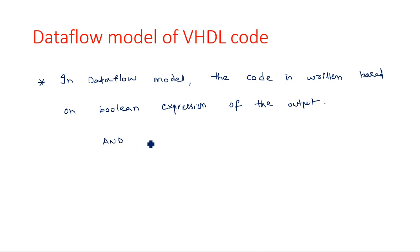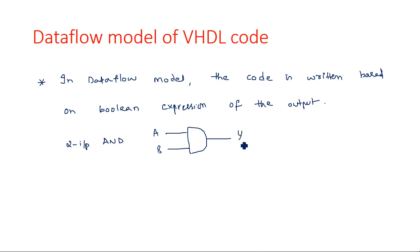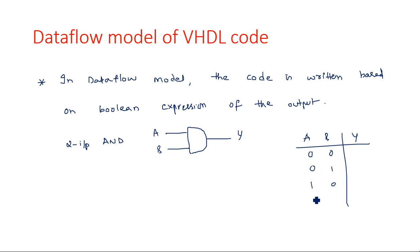For example, consider a two-input AND gate with inputs A and B and output Y. For the same AND gate, if you are asked to write the VHDL code in behavioral model, you take A and B as inputs and Y as output. The input combinations are 0-0, 0-1, 1-0, and 1-1, with output 1 only at 1-1 — this is the standard AND gate operation.